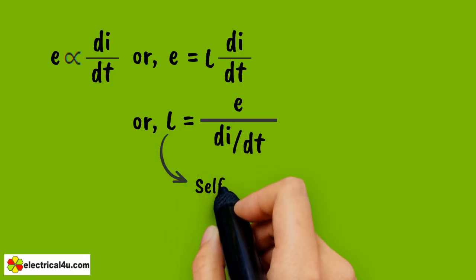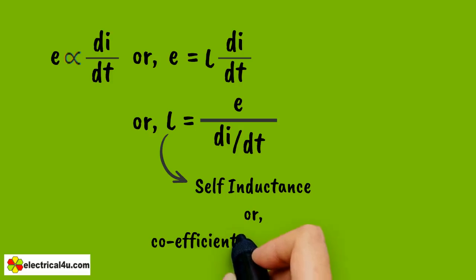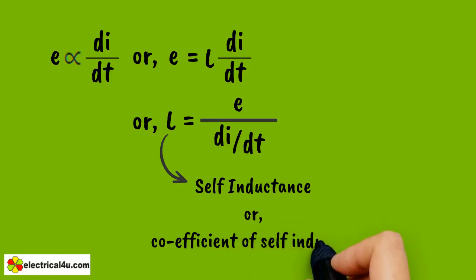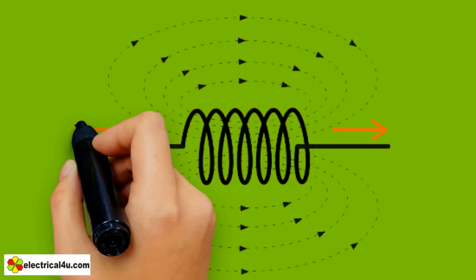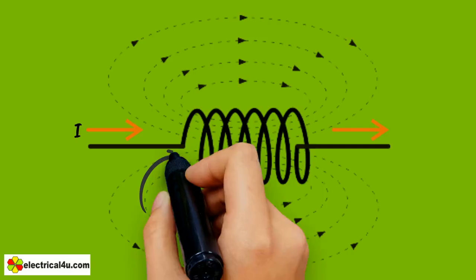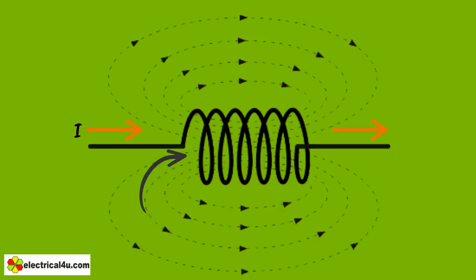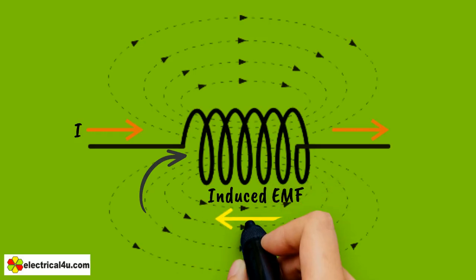This L is self-inductance or coefficient of self-induction. When current I flows through a coil, some electric flux produces inside the coil. At that moment of self-induction phenomenon, the induced EMF generates to oppose this rate of change of current in that coil.